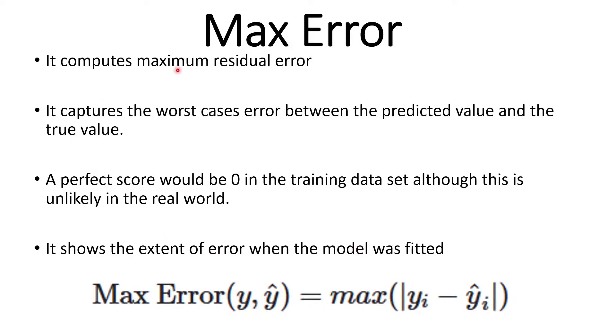Max error computes the maximum residual error. It captures the worst case error between the predicted value and the true value. A perfect score would be 0 in the training data set, although this is unlikely in the real world. It does show the extent of error when the model was fitted.